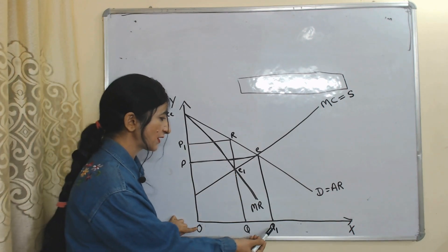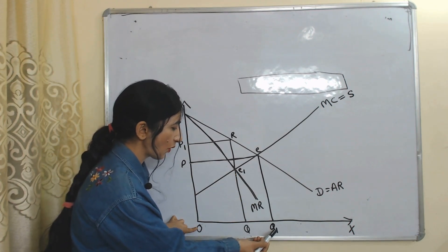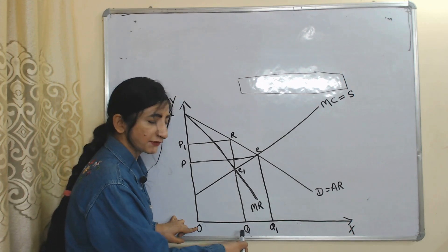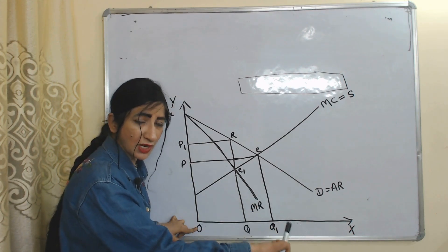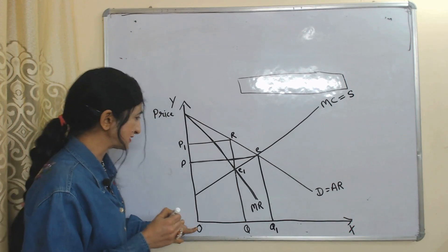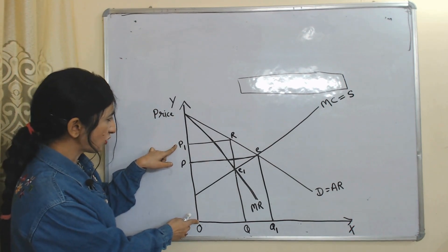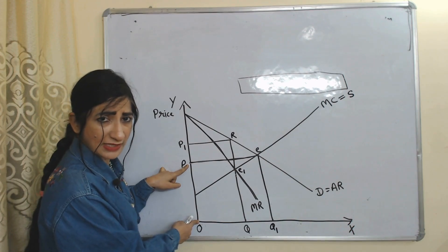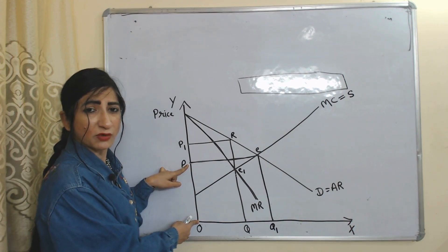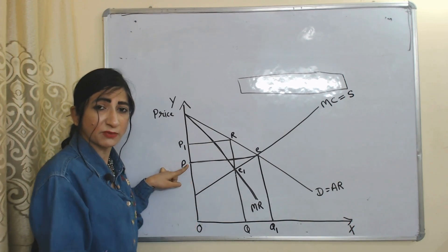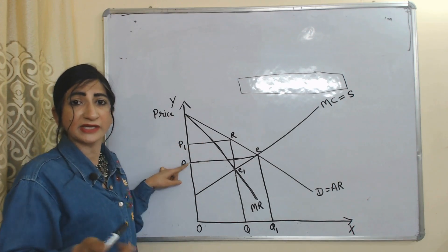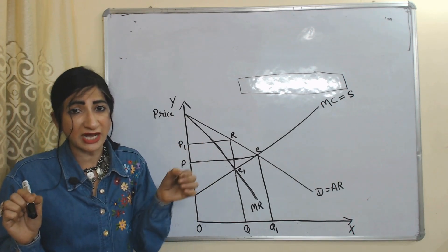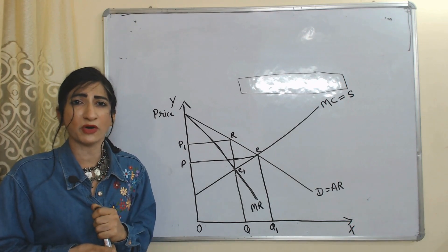At the equilibrium point you can see perfect competition is producing OQ1 but monopoly is producing only OQ, meaning perfect competition produces more but monopoly produces less. Monopoly is charging OP1 price but perfect competition is charging only OP price. So perfect competition produces more and charges less price as compared to monopoly.